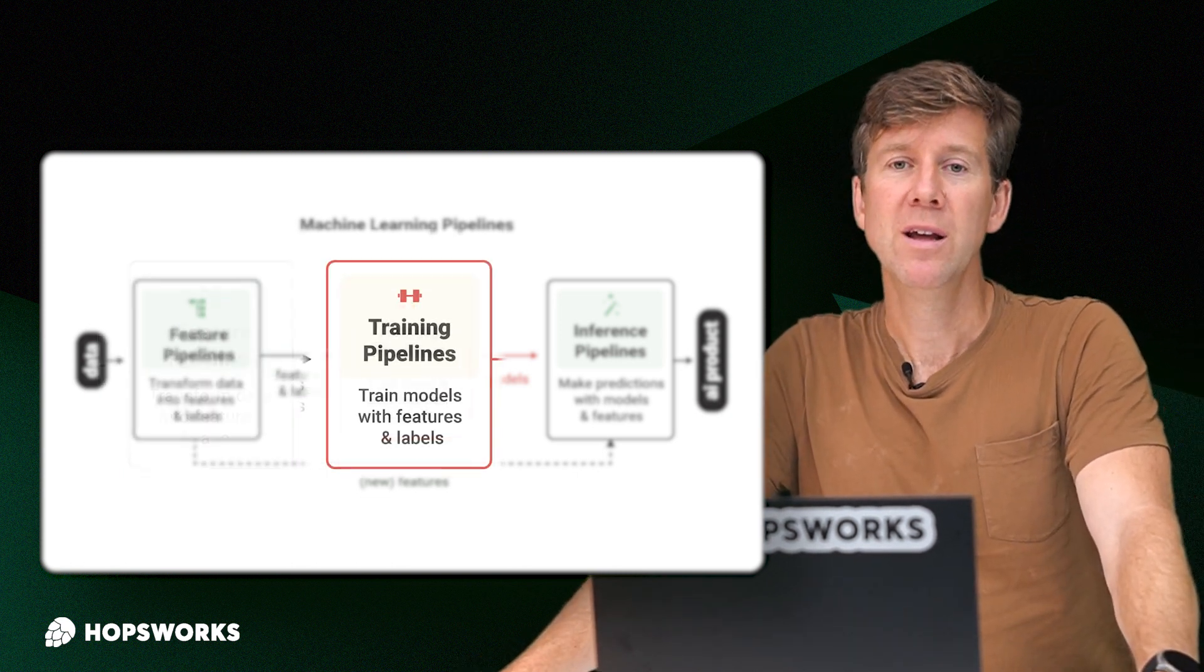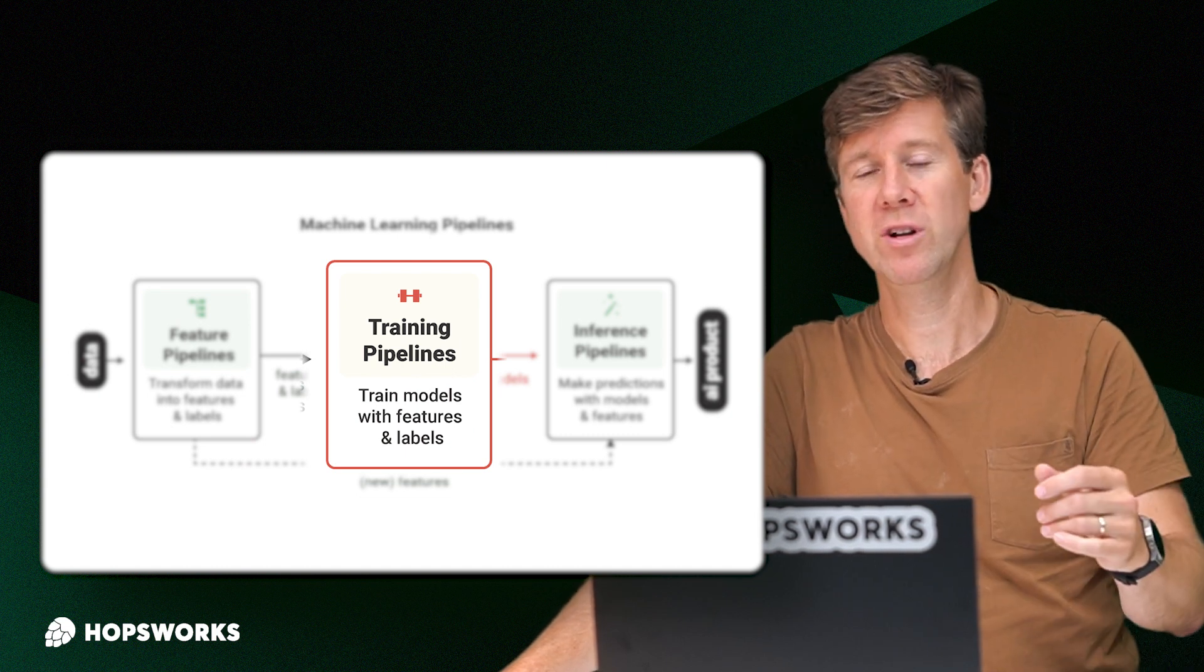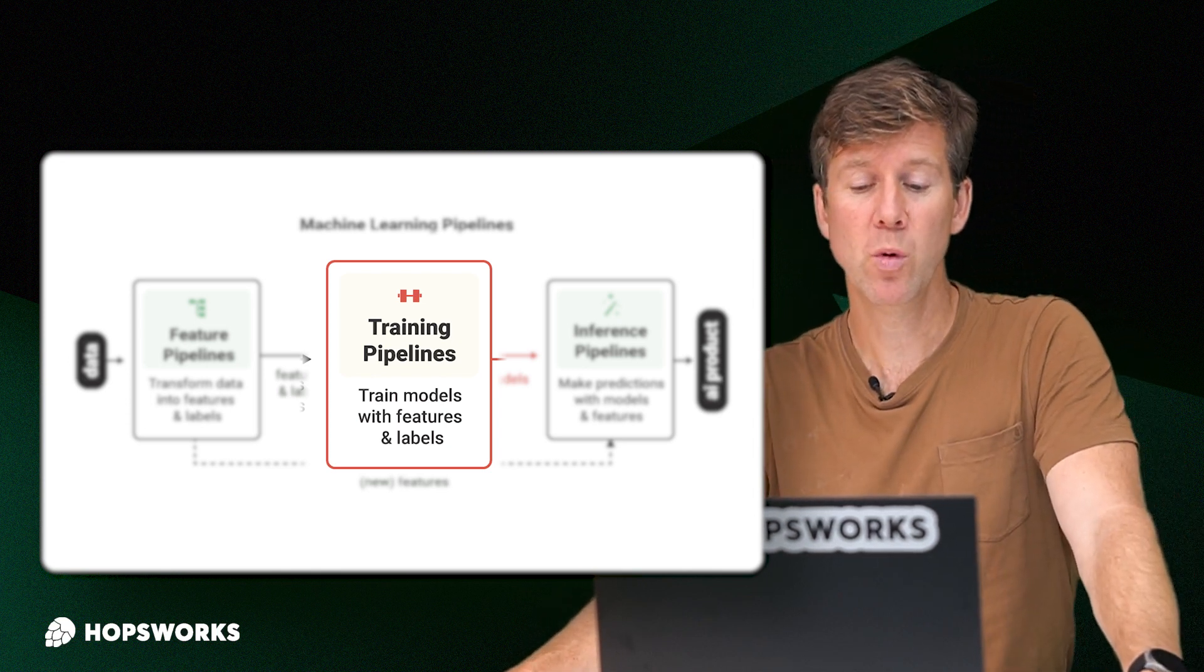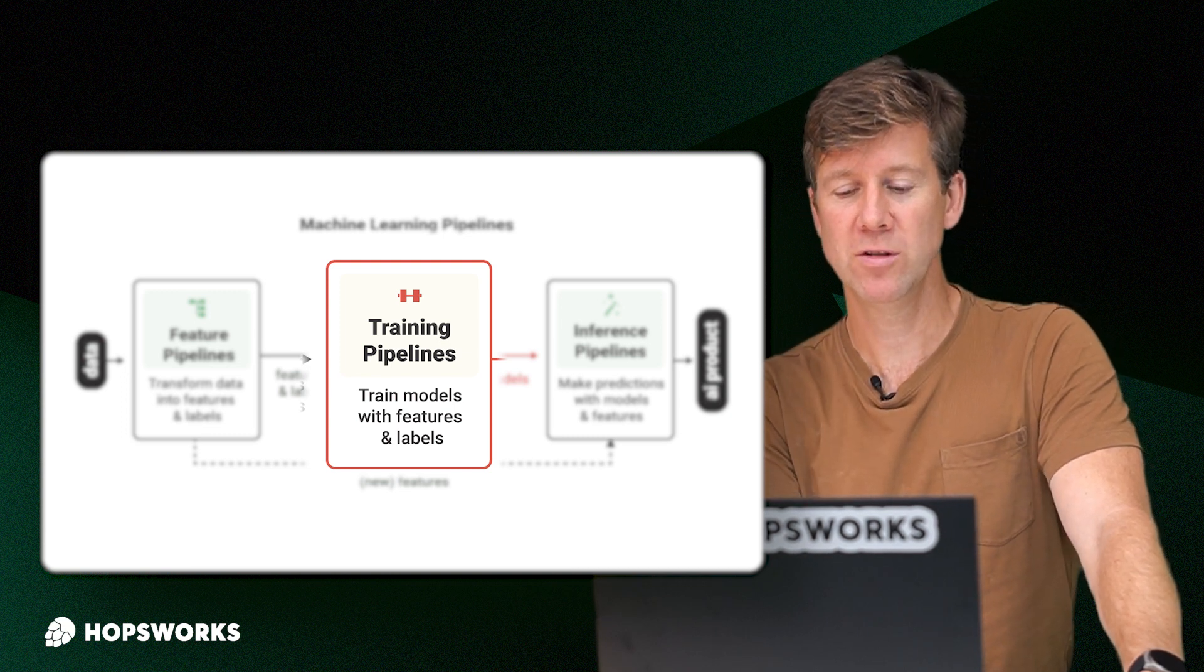Similarly, with the training pipeline, you can get into details of what framework we'll use to train the model. Will it be a decision tree? Will it be a deep neural network? Where will we get the features from? We're going to get them from the feature pipeline somehow. And we'll look at that in a second with a feature store.